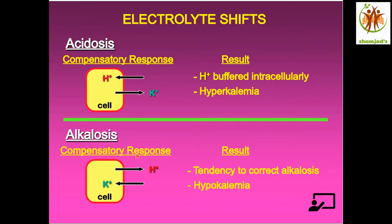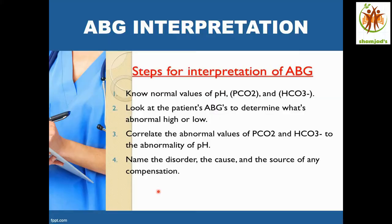In the case of alkalosis, as a compensatory response, we need more acid in the bloodstream to neutralize the alkalosis. So H+ ions come out from the cell and, at the same time, potassium goes into the cell to maintain electrical neutrality. The result is a tendency to correct alkalosis and hypokalemia, because potassium ions move into the cells and the bloodstream shows low potassium.